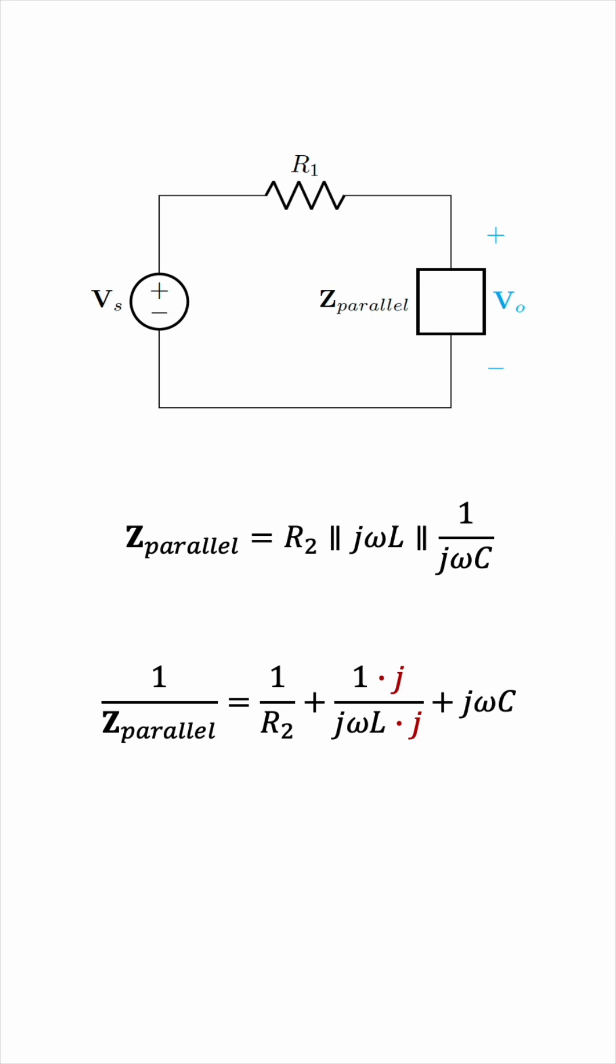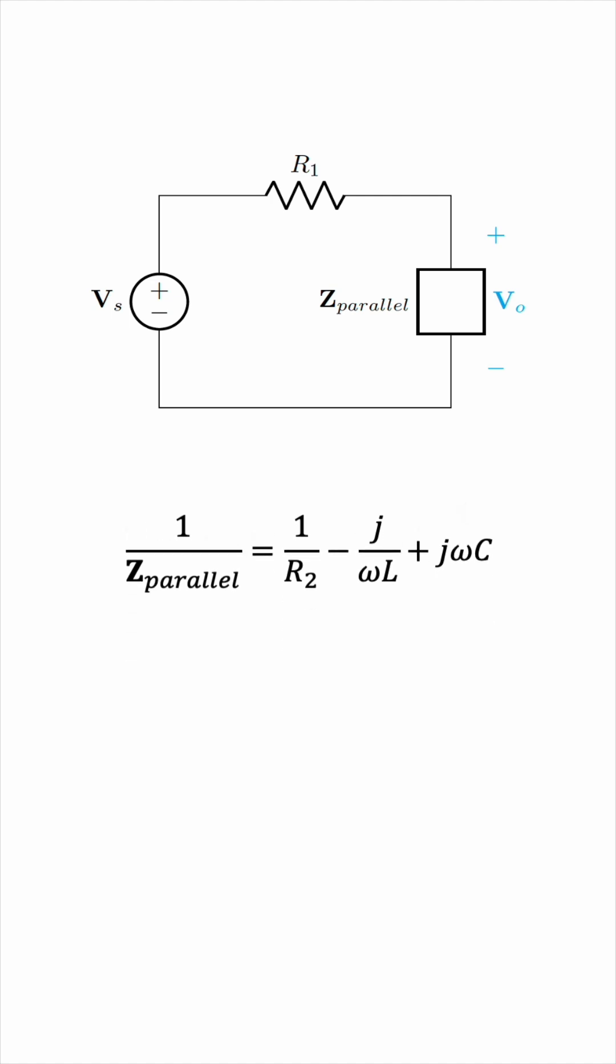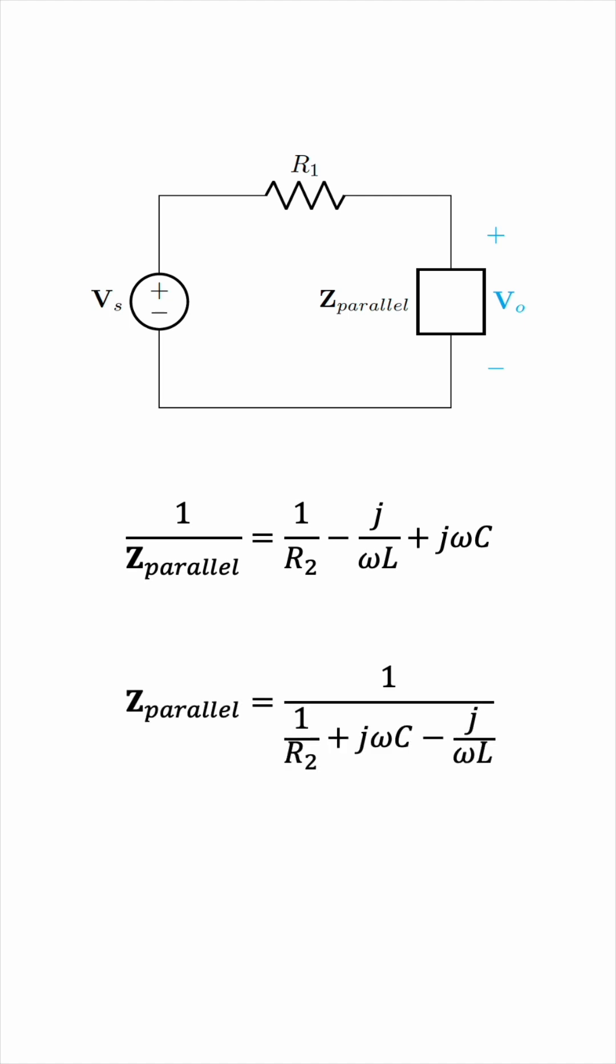So that it's clear what the real part is and what the imaginary part is. This will simplify to negative j over omega L. And now we'll find Z parallel by reciprocating this expression.